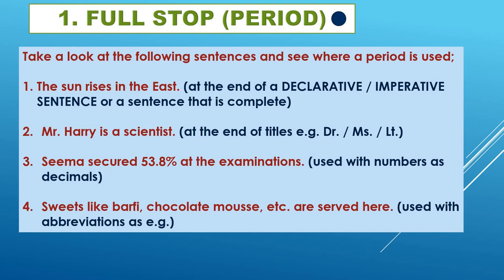Full stops are used for abbreviations. For example, 'e.g.' for 'for example', 'M.A.' for Master of Arts, 'M.Sc.' for Master of Science. Similarly, United Nations is written as 'U.N.' These are all abbreviations in which we use the full stop or dot. So full stop has these four uses.